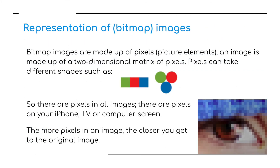And finally, how do we represent bitmap images on a computer? Bitmap images are made up of pixels — a term you may be familiar with. Pixels is short for picture elements. An image stored on your computer is made up of a two-dimensional matrix of pixels. Pixels can take different shapes and there are pixels in all images — on your iPhone, your TV screen, or your computer screen.